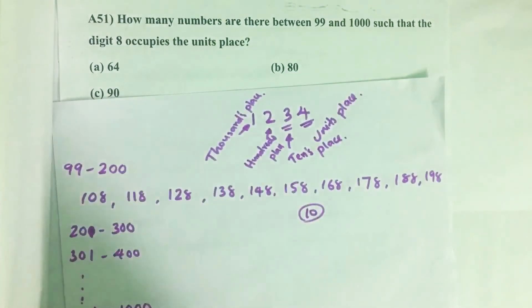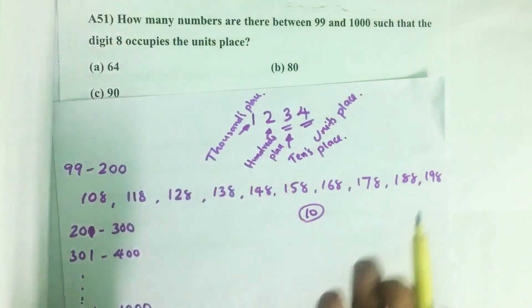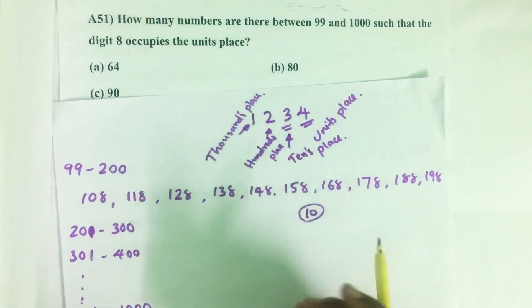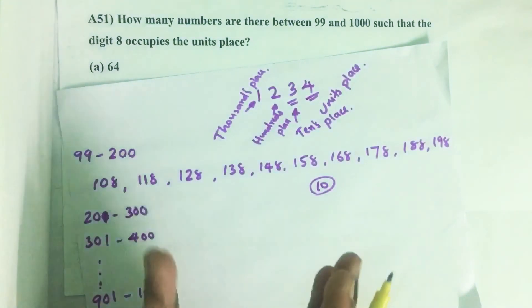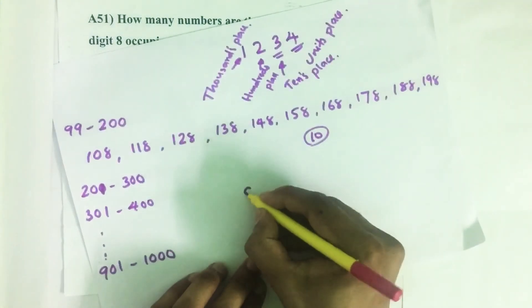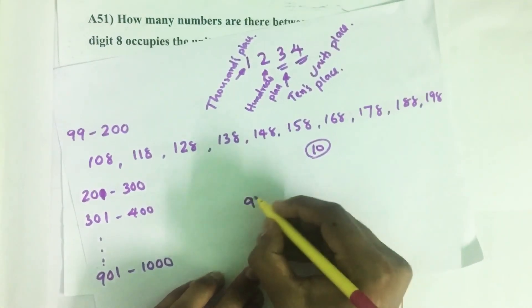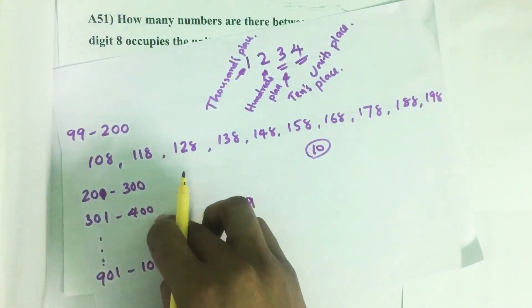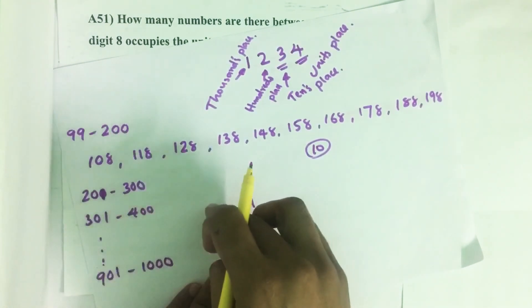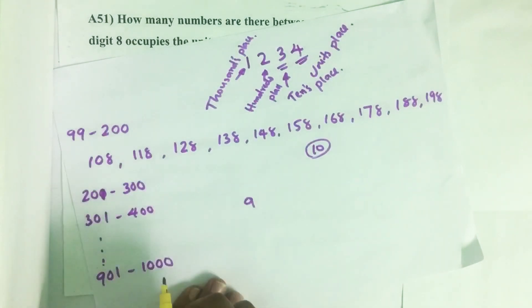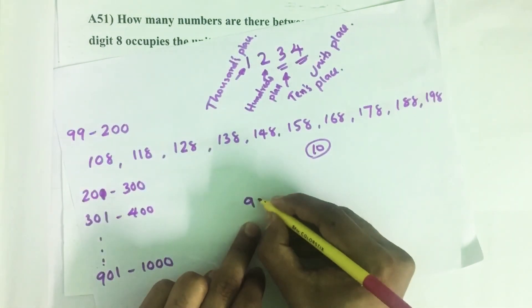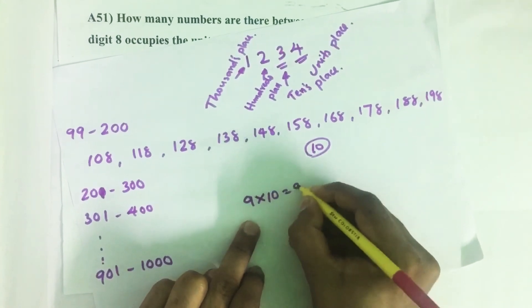Similarly, from 201 to 300, there are numbers like 208, 218, and so on — 10 numbers. We have 9 such sets in total: 200 to 300, 300 to 400, 400 to 500, and so on up to 900 to 1000. So, 9 sets multiplied by 10 gives us 90.